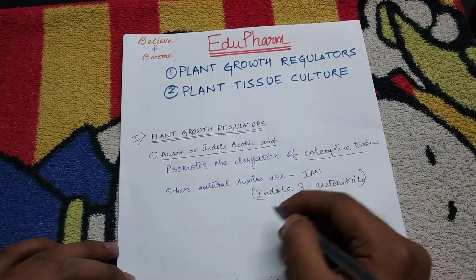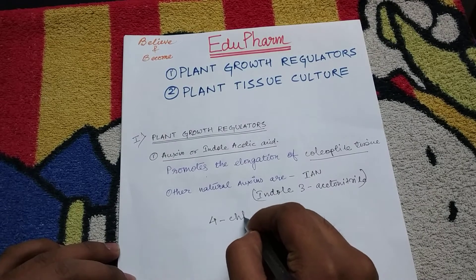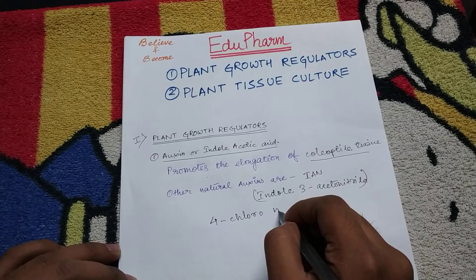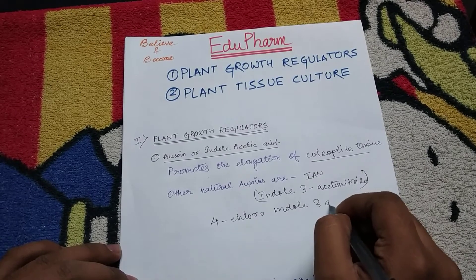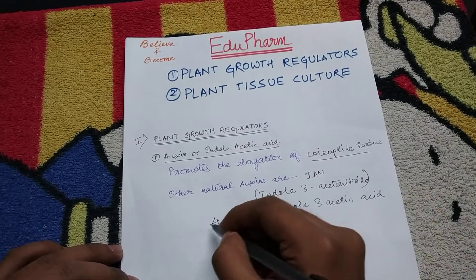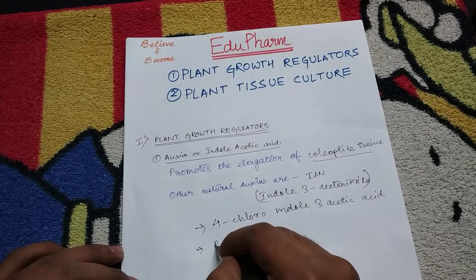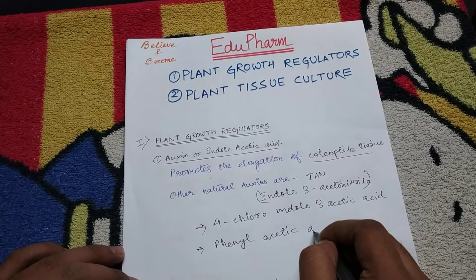Then there is 4-chloroindole 3-acetic acid, and there is phenyl acetic acid.